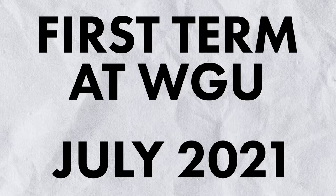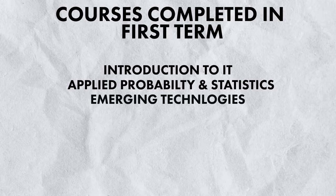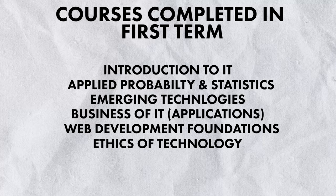I spent two terms at WGU. My first term started in July 2021, right after finishing my community college program. I spent a little over two years at community college but didn't actually graduate — I just transferred credits to WGU. I did my first six months from July to December 2021, and during that period I completed about 32 credits.